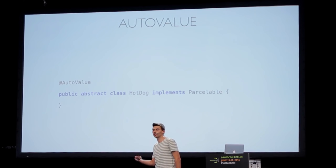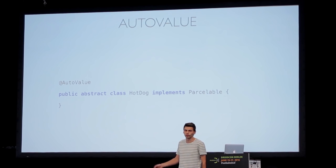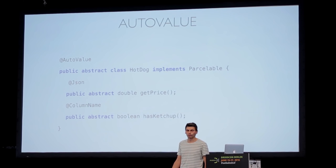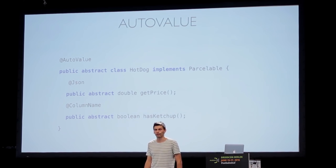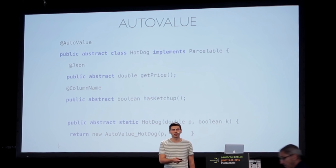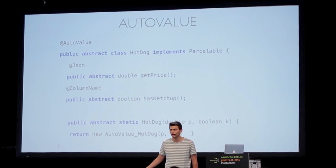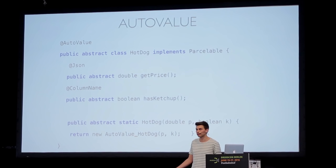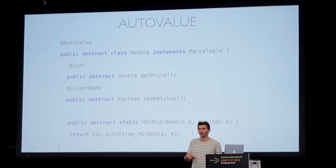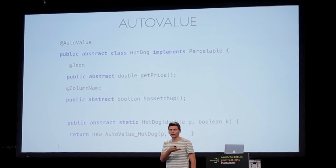There's more you can do — some JSON annotation for various JSON serializers, and you can annotate with a column name to get a cursor mapper from SQL cursor to your database. The generated class is called AutoValue underscore your class name and it has package-private visibility, so it's not possible to instantiate it outside the package, preventing creation of a hot dog instance without making it immutable.